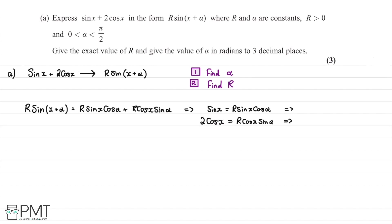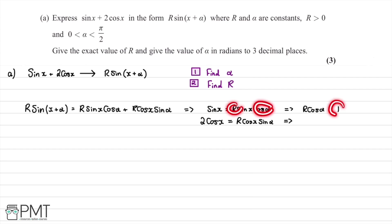From this, we can work out that r cos alpha is going to be equal to 1, because the coefficient in front of sin x is 1. And in the same way, r sin alpha is going to be equal to the coefficient in front of cos x, which is 2. So we can now find alpha.